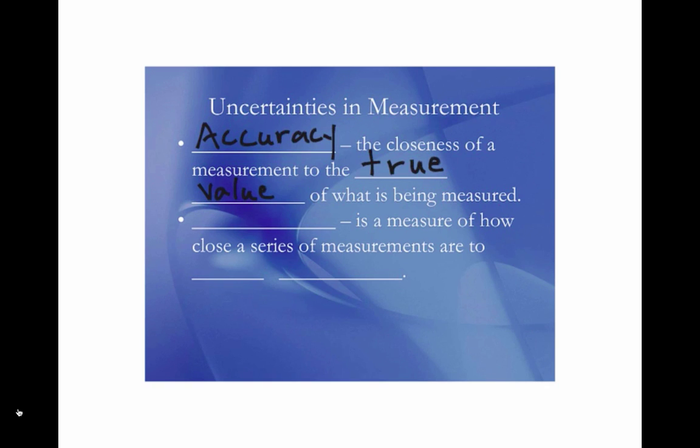Another measure of uncertainty is called precision. Precision is a measure of how close a series of measurements are to each other.